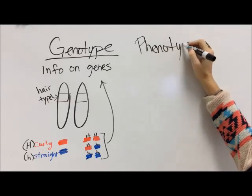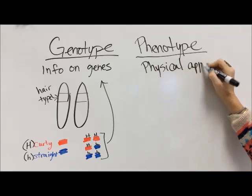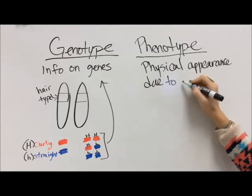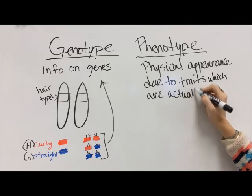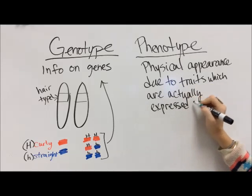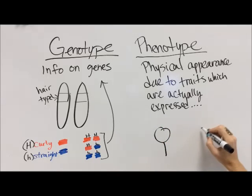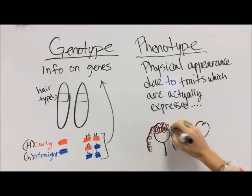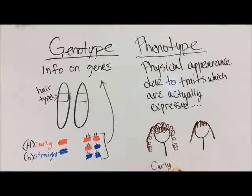This genotype then determines our phenotype, our physical appearance. Phenotype is the type of appearance due to what trait is actually expressed. If you have two curly alleles, you obviously have curly hair. If you have two straight alleles, you obviously have straight hair. The curly covers up the straight, so you have curly hair. So we only have two phenotypes in this situation: curly and straight hair. This is what the trait actually looks like on the person.